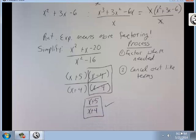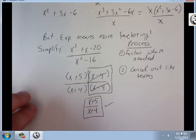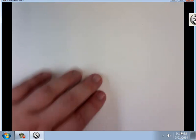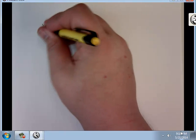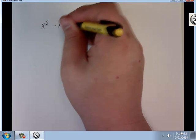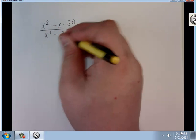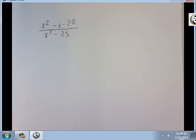Now we're going to do one more example. And it's going to be similar to the one we just did. x squared minus x minus 20 over x squared minus 25. Same process.